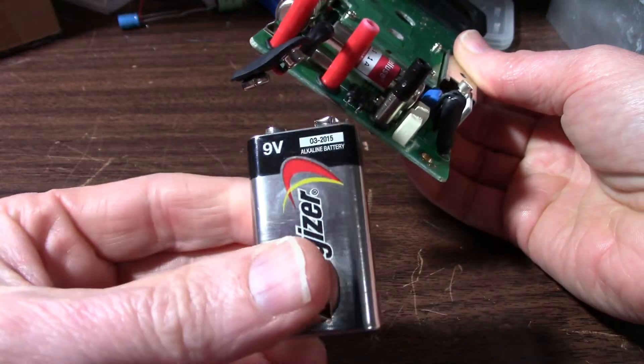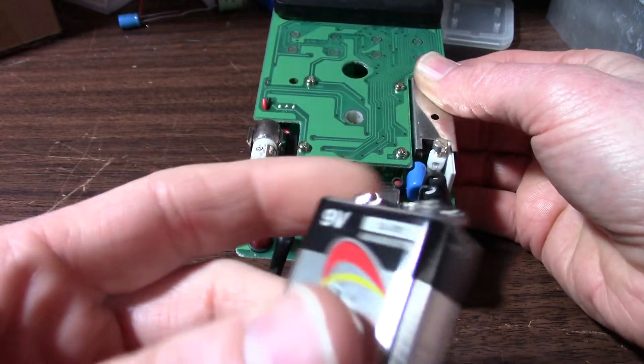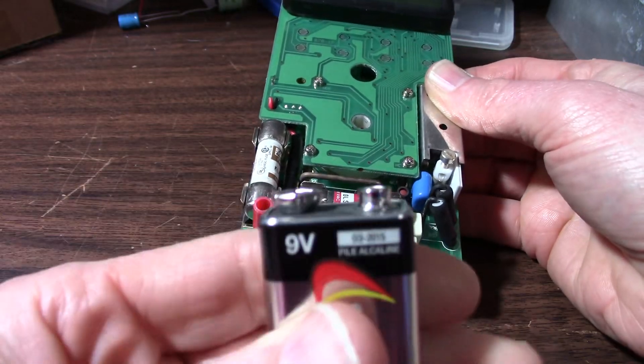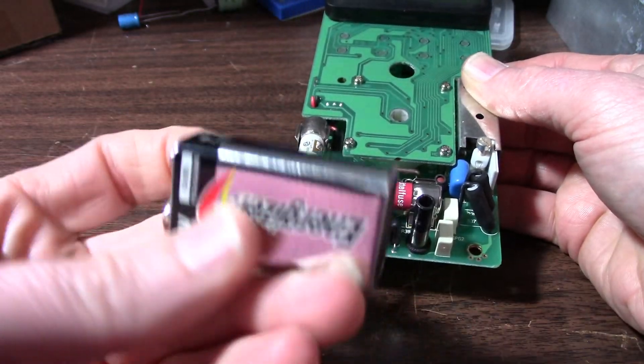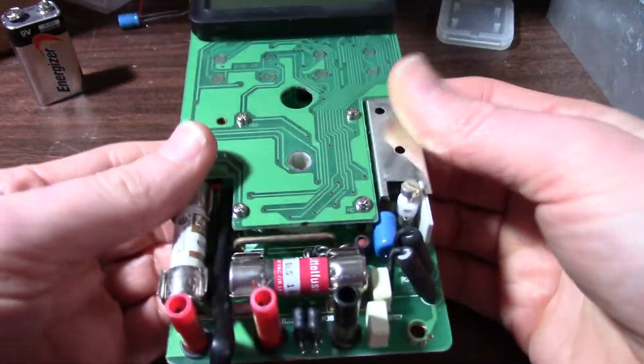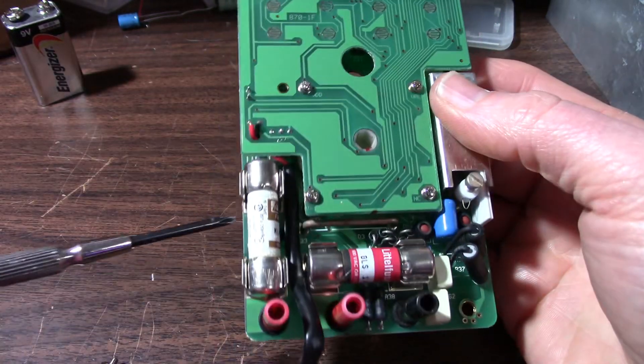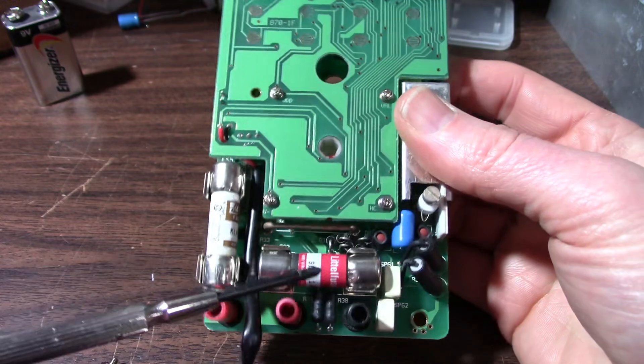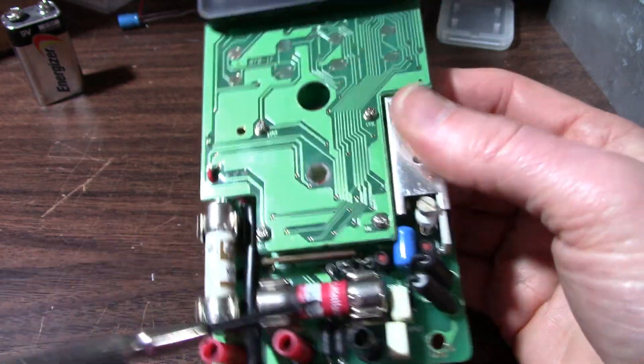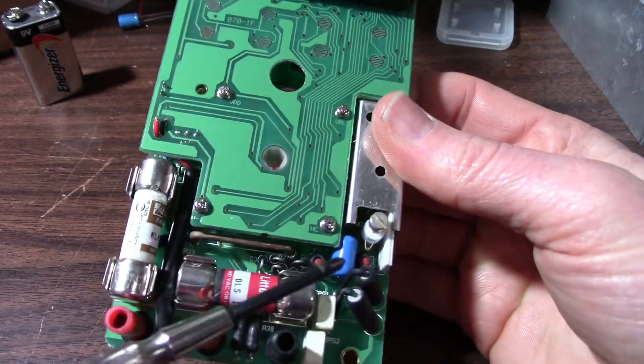It takes a 9 volt battery. Well if the battery life is good then it's okay. But I had a meter that just ate through these 9 volt batteries. It was just expensive to run. It has these nice quality fuses. What do they call these? HRC or something like that.